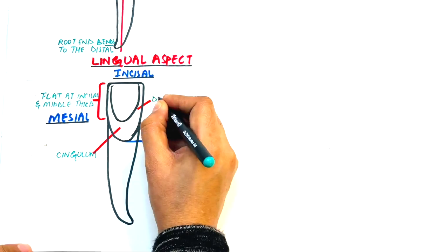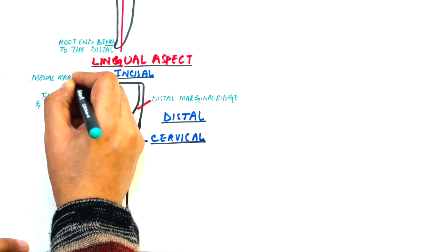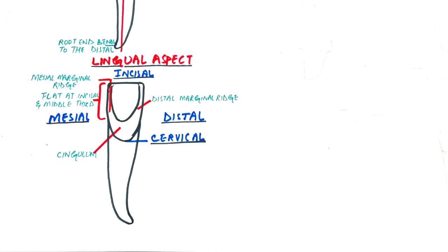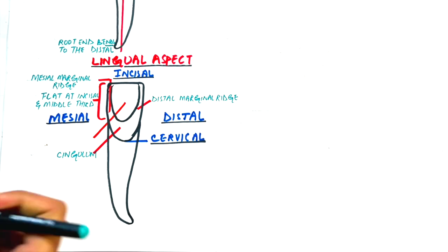The mesial and distal marginal ridges are inconspicuous. As these ridges are not so prominent, therefore the concavity formed in between these ridges and above the cingulum, called the lingual fossa, is also not so deep.